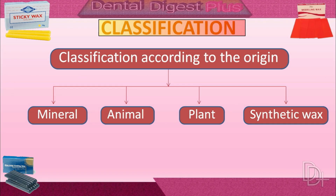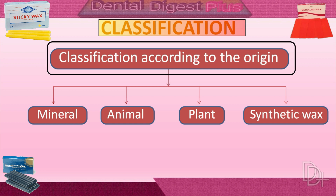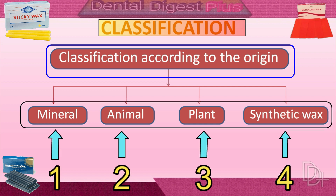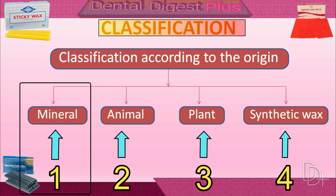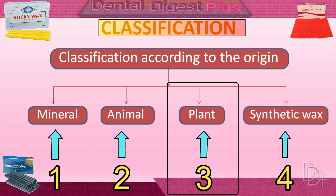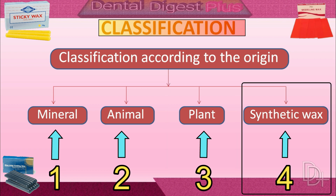Now let's talk about the classification of dental wax. Please note that classification of dental wax is very important from an exam point of view. Dental wax is classified in several ways. According to origin, dental wax is classified into four parts: first, mineral origin; second, animal origin; third, plant origin; and fourth, synthetic wax.